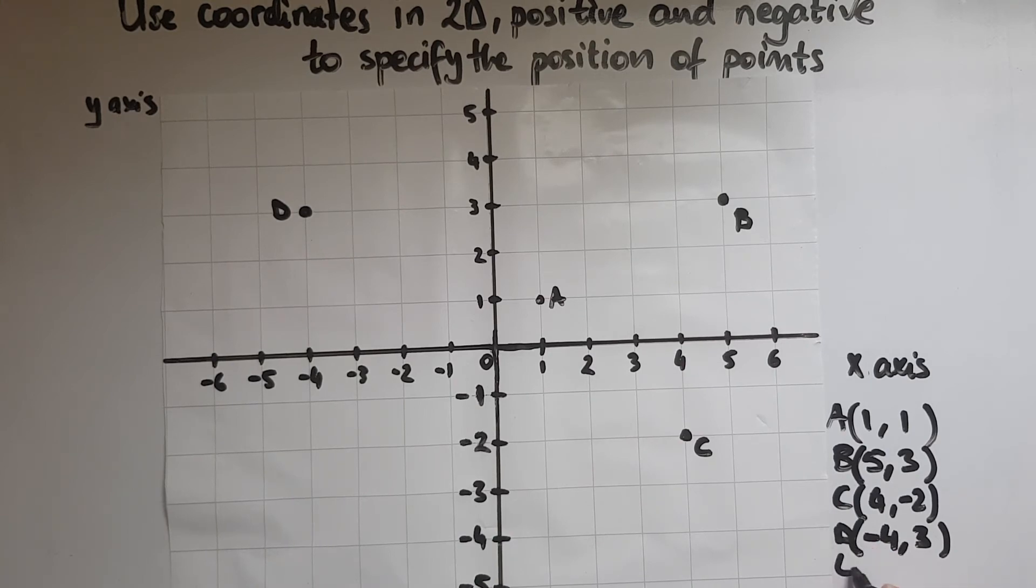And point E at (-5, -2). We're going to minus 5 and then minus 2. This is point E.